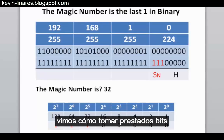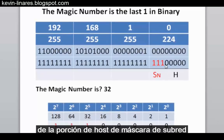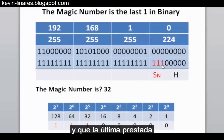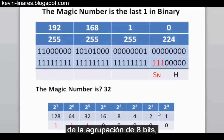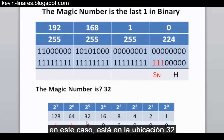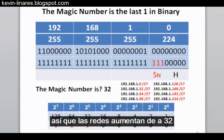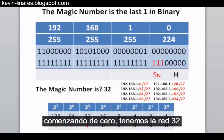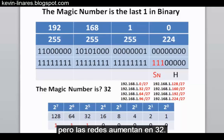In classless subnetting, we've seen how we can borrow bits from the host portion of the subnet mask, and the last one that's borrowed is the magic number. Looking at the place value of the 8-bit grouping, the last borrowed bit in this case is in the 32s place, so the networks go up by 32 — starting with the zero network, then 32, 64, 96, 128, and so forth.